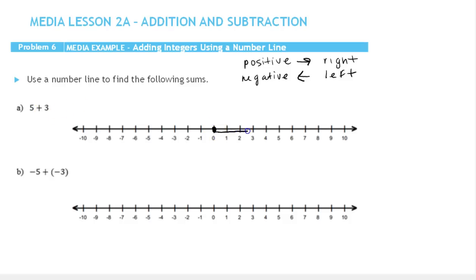So 5 will get us to here — there's positive 5. And now we're going to move 3 more in the positive direction.